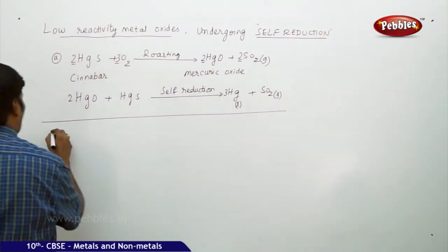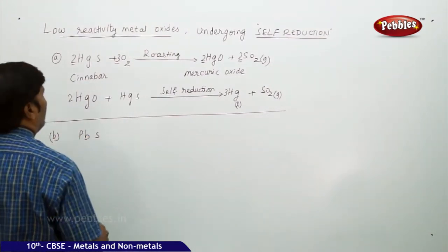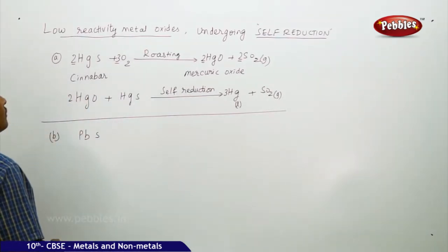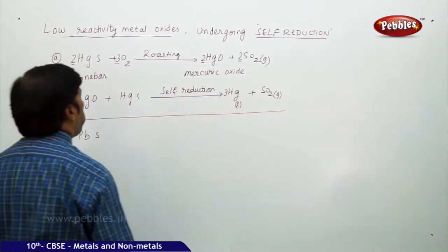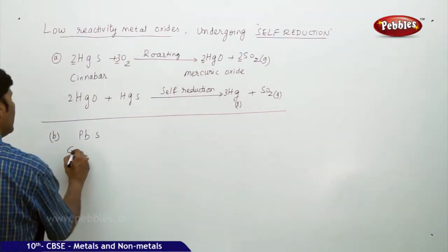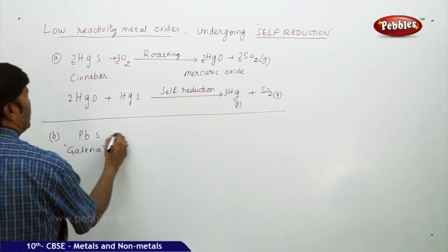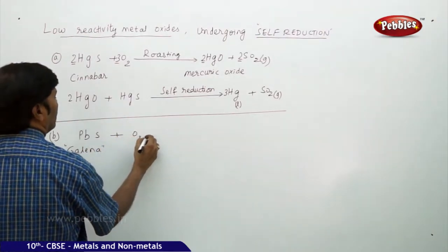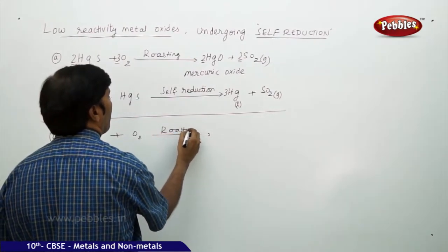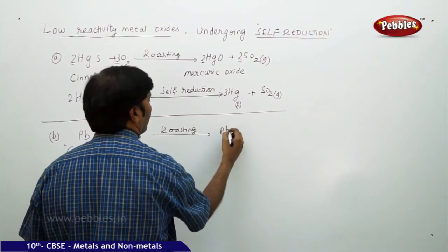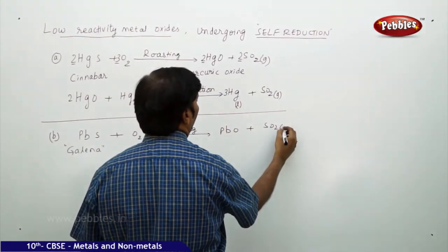Likewise, for example B: PbS (galena) is a mineral ore. When it is subjected to roasting, it gives PbO plus sulfur dioxide gas.